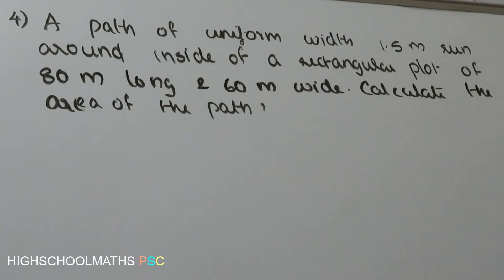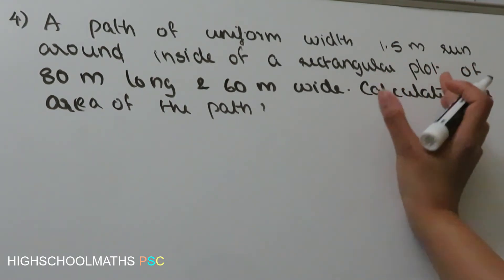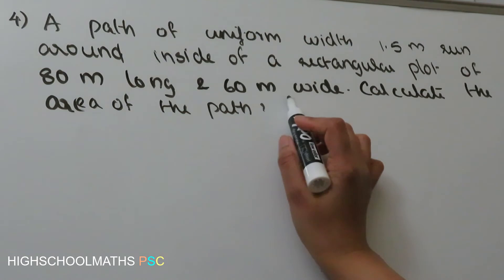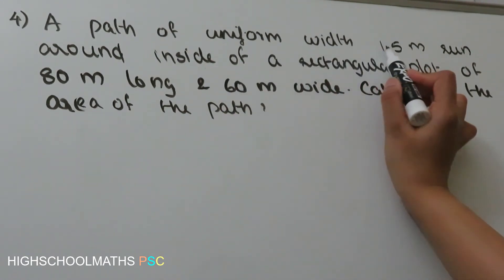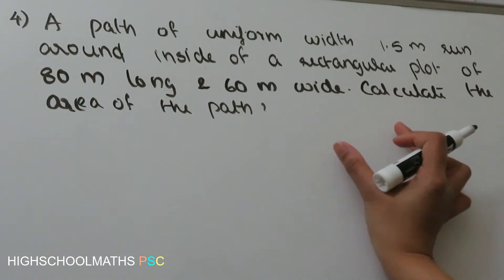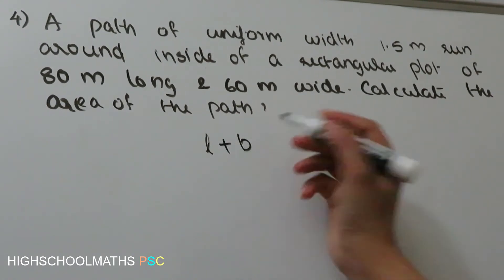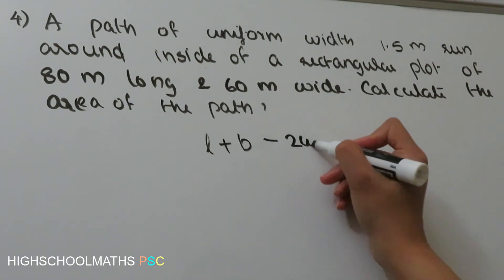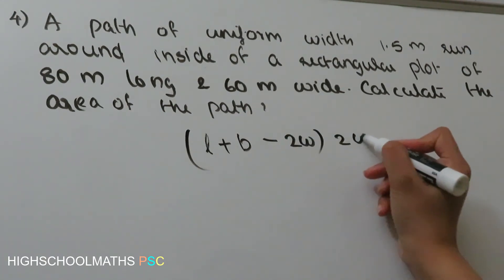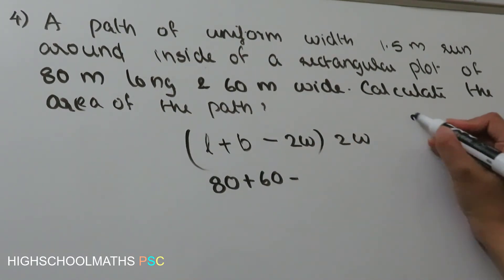A path of uniform width 1.5m inside a rectangular plot 80m long and 60m wide — calculate the area of the path. This is a rectangle inside a rectangle. The equation is L plus B minus 2W, into 2W, where 2W equals 2 times 1.5m.